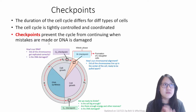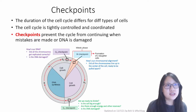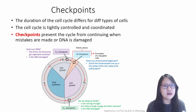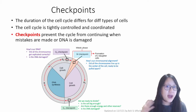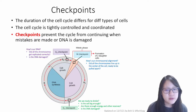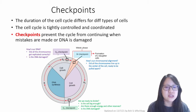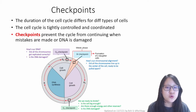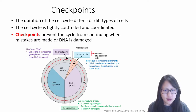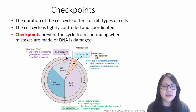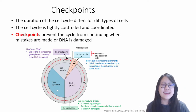So if there's something wrong with the cell cycle, stop it before the cell divides, destroy the cell, or repair the cell before moving on. One checkpoint we specifically talked about previously was the checkpoint in G2, where there was repair of DNA, just in case there are any mistakes that occurred during DNA replication in the S phase.